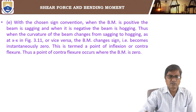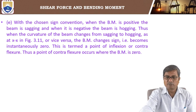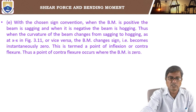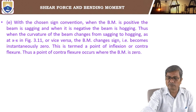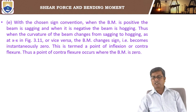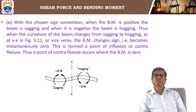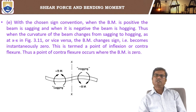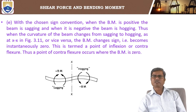With the chosen sign convention, when the bending moment is positive the beam is sagging, and when it is negative the beam is hogging. When the curvature changes from sagging to hogging at section x — or vice versa — the bending moment changes sign, becomes instantaneously zero, and this point is termed the point of inflection or contraflexion. The point of contraflexion occurs where the bending moment changes sign.